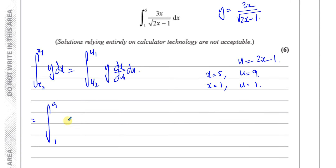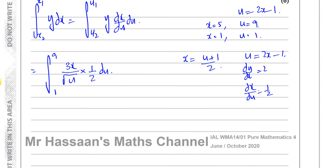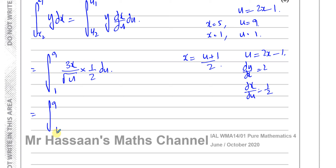The integral runs between 9 and 1. Y becomes 3x over the square root of u. Since u equals 2x minus 1, du/dx equals 2, so dx/du equals 1/2. And x equals (u plus 1) over 2. So the integrand becomes 3 over the square root of u times (u plus 1) over 2 times 1/2 du.